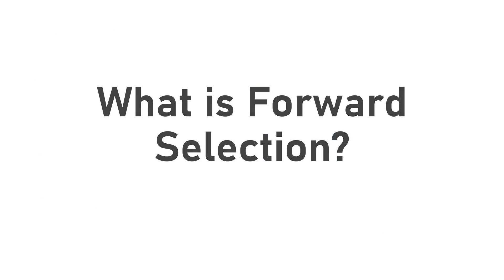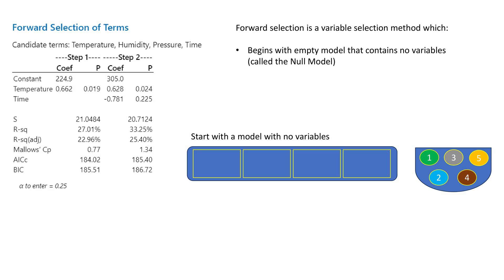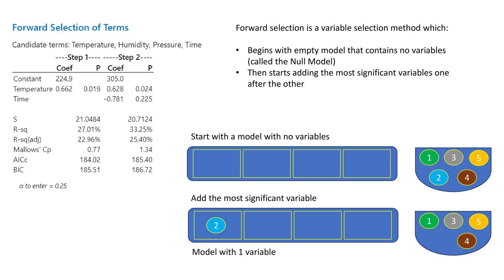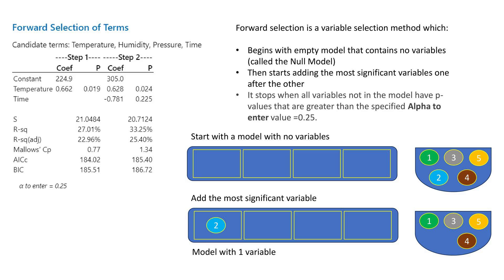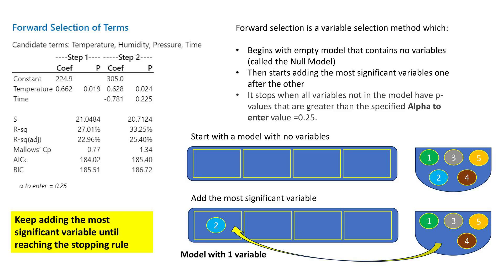Forward selection is a variable selection method which begins with an empty model that contains no variables, called the null model. It then starts adding the most significant variables one after the other. It stops when all variables not in the model have p-values greater than the specified alpha-to-enter value of 0.25. Keep adding the most significant variable until reaching the stopping rule.